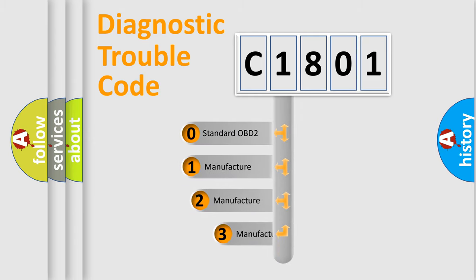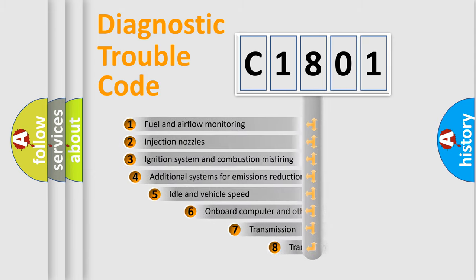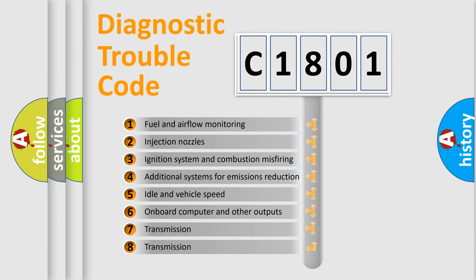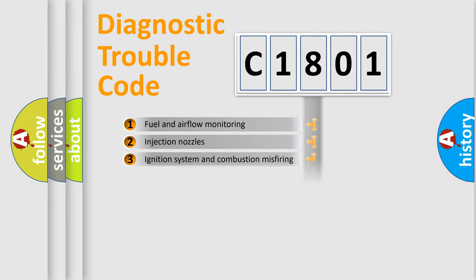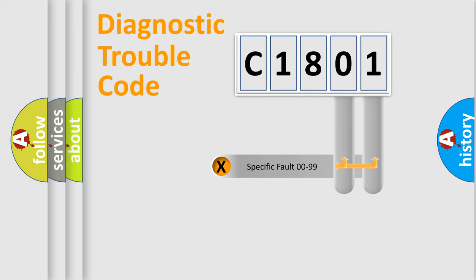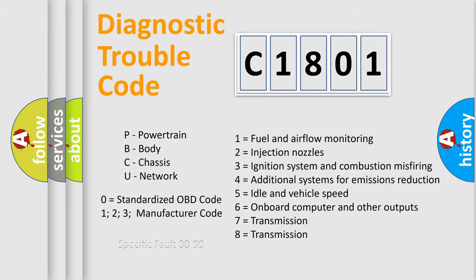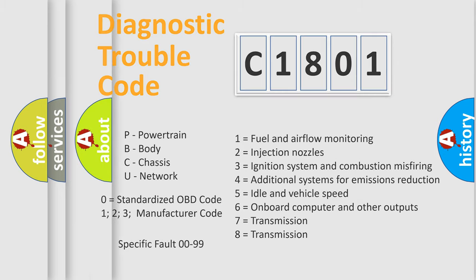If the second character is expressed as zero, it is a standardized error. In the case of numbers 1, 2, or 3, it is a more specific expression of a car-specific error. The third character specifies a subset of errors. This division is valid only for the standardized DTC code, where only the last two characters define the specific fault of the group. Such a division is valid only if the second character code is expressed by the number zero.